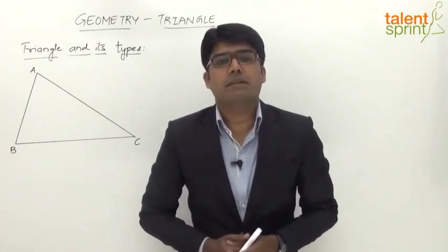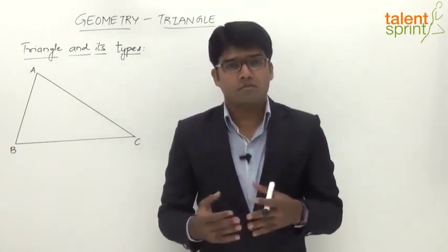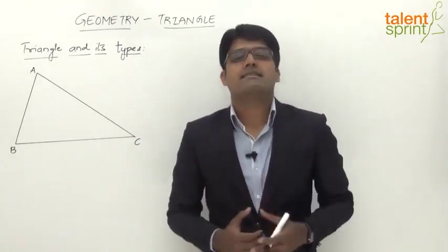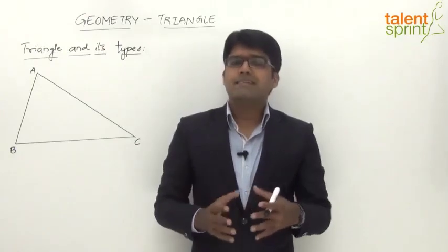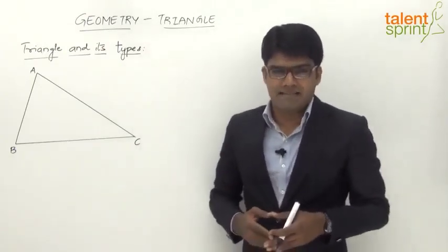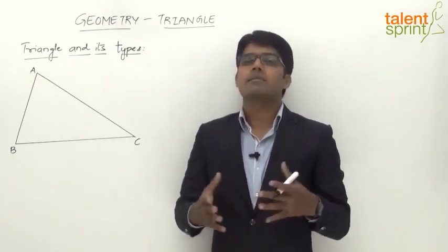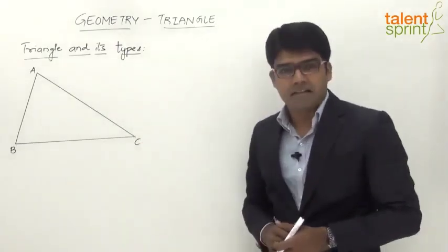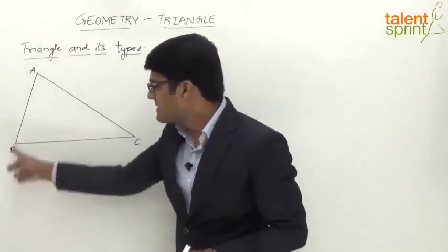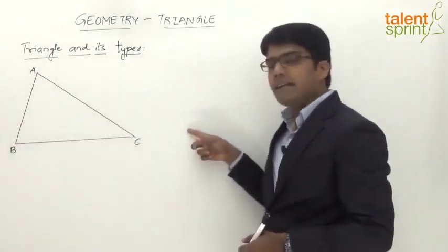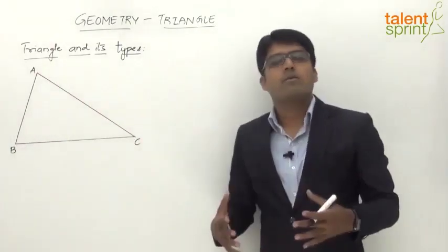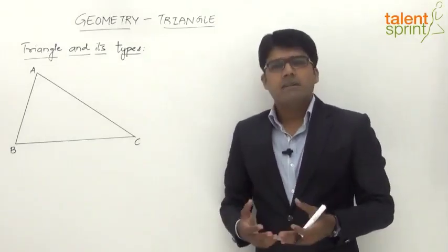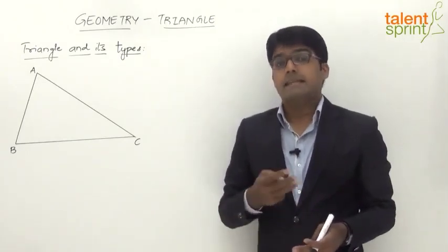Having learned about the relationship between different angles when a set of parallel lines is cut by a transversal, let us now understand what a triangle is and its types. A triangle is a figure that is bounded by three straight lines. Any figure bounded by three straight lines can be taken as a triangle. A figure bounded by three straight lines is called a triangle.